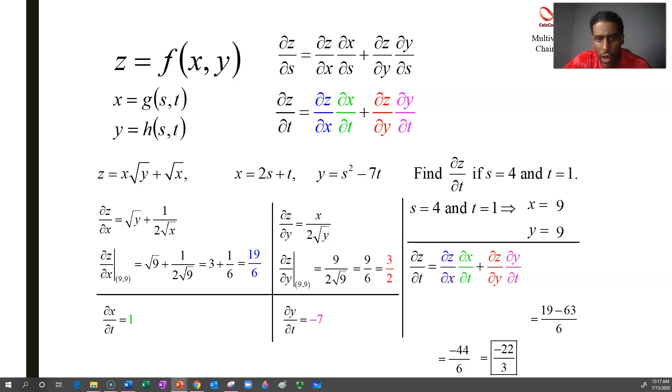The 19 over 6 times the 1. The 3 over 2 times the negative 7. And we end up with 19 over 6. And then, the 21, you triple top and bottom. So 63 over 6. Minus, that is. So when you subtract, you'll have 44 over 6 negative. But you can reduce it. And that's how you end up with the answer of negative 22 over 3.